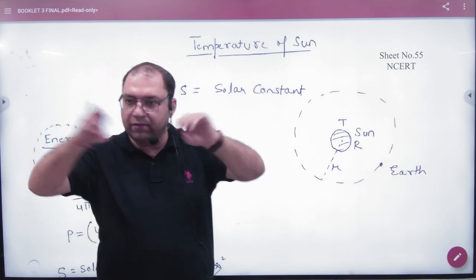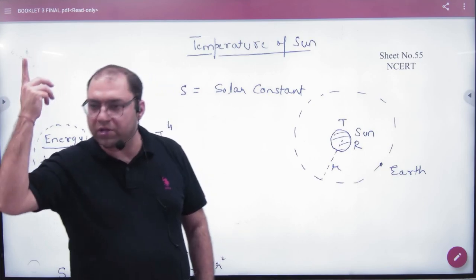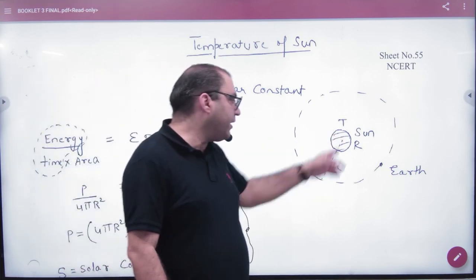The sun is emitting energy per second per unit area and we are living on the earth. Our earth is at distance r. Energy will reach wherever it travels. The radius r is the distance from the sun.